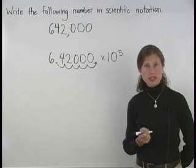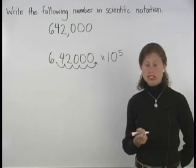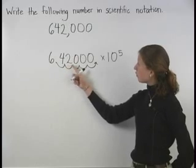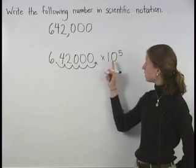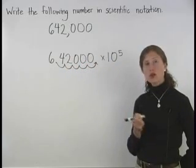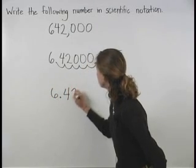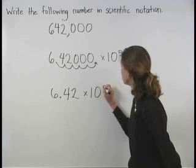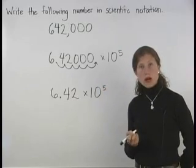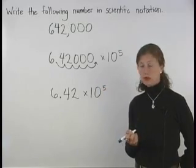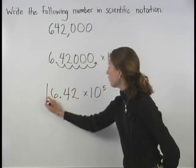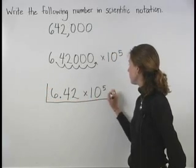So 642,000 can be written in scientific notation as 6.42000 times 10 to the 5th power, or just 6.42 times 10 to the 5th power. Remember that we can drop zeros at the end of a decimal, so we have 6.42 times 10 to the 5th power.